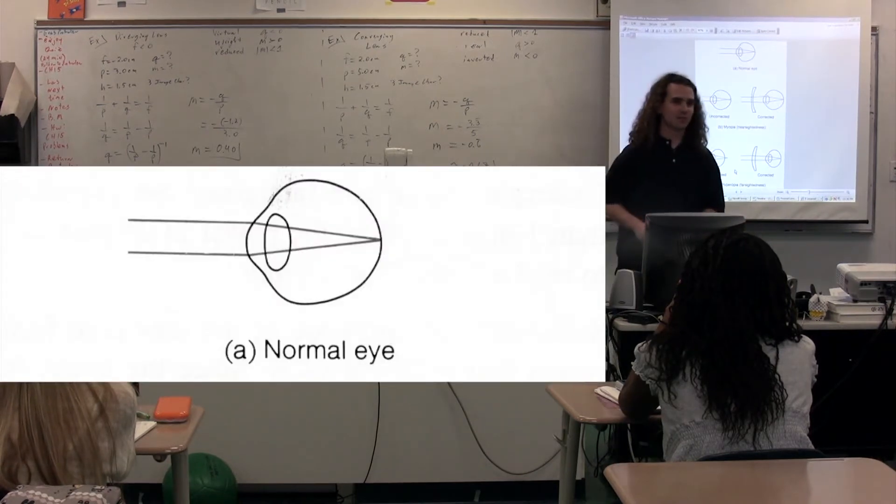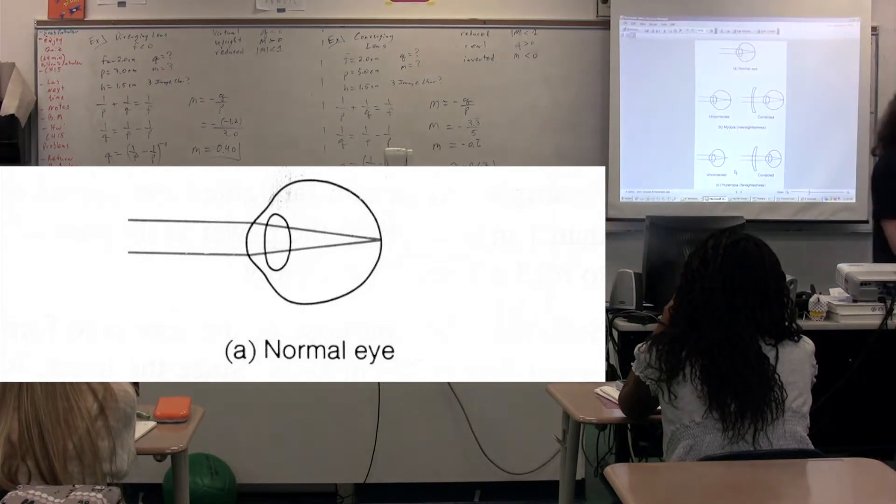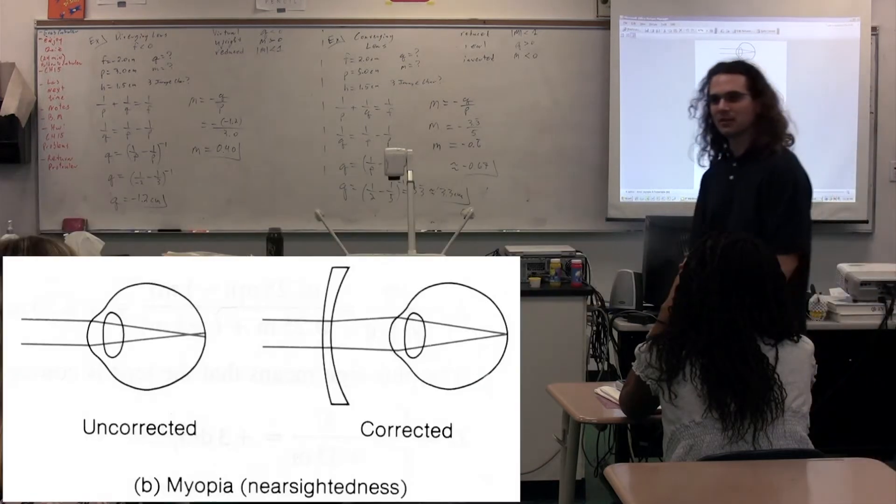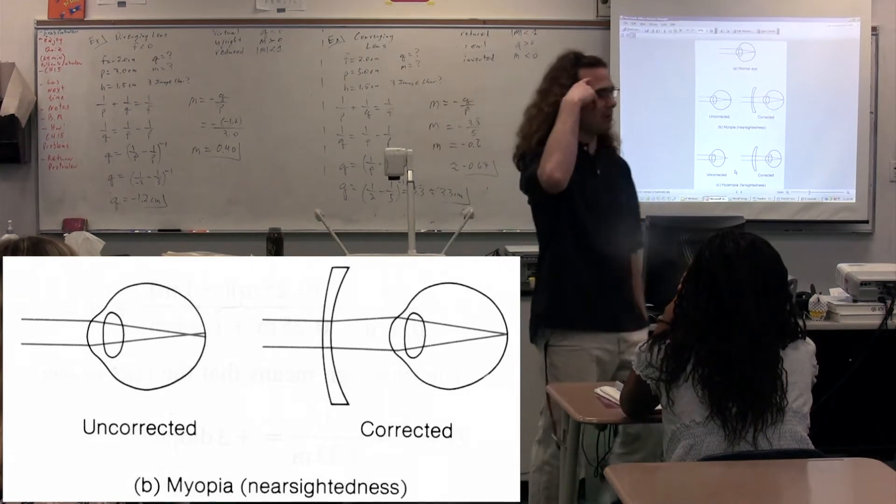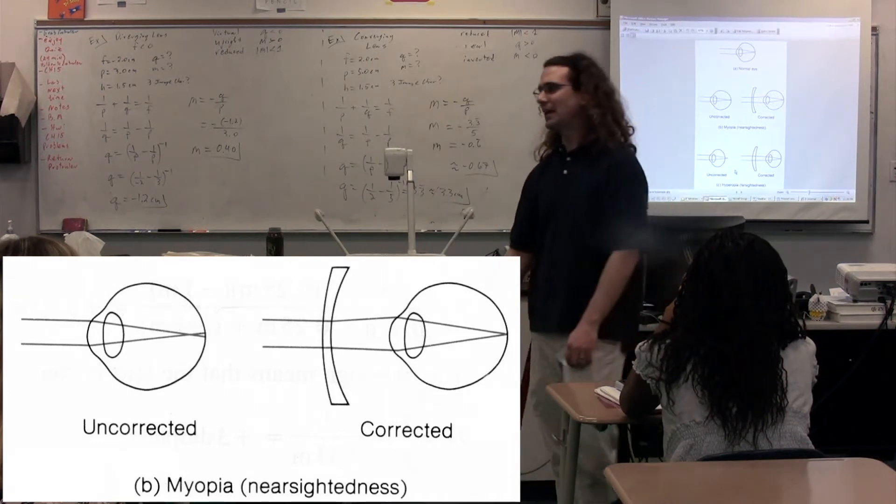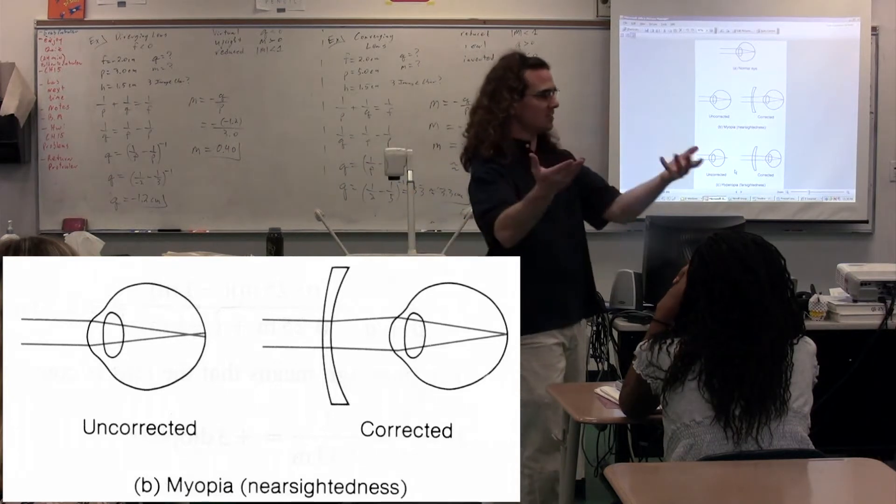Some of us have to wear glasses. Some of us are myopic or hyperopic, suffer from myopia or hyperopia. Some of us are nearsighted or farsighted. I am myopic, not in brain but in sight. Myopic in that I can see things well that are close, but I can't see things that are far away.